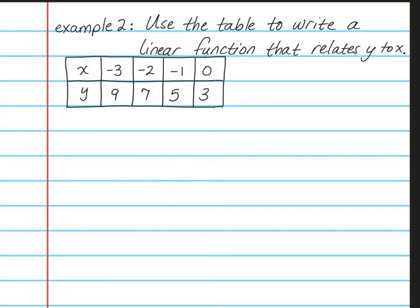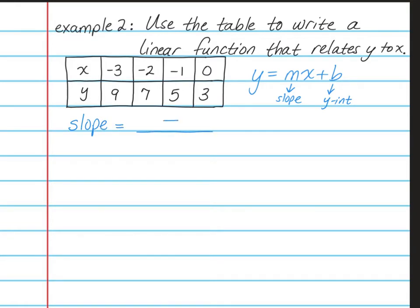Please pause the video for a moment and write down the second example. We need to use the table to write a linear function that relates Y to X. Remember, a linear function is written as Y equals MX plus B, where M is your slope and B is your Y-intercept. This time, we don't have a graph to count our slope, so we need to use our slope formula. The slope formula is a fraction with two minus signs on the top and the bottom. I have four different points here, and what you need to do is choose any two points.